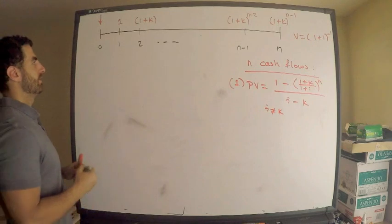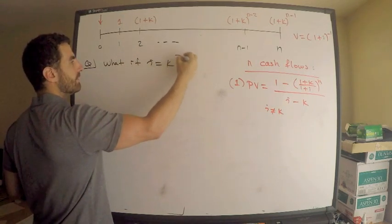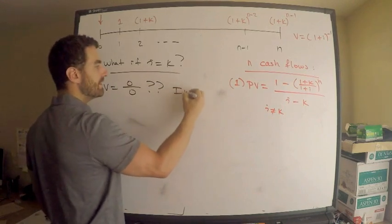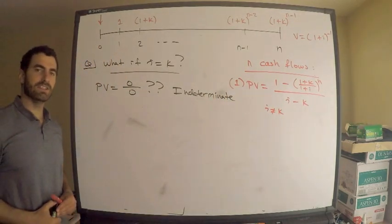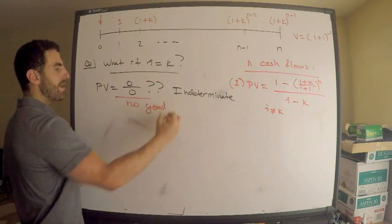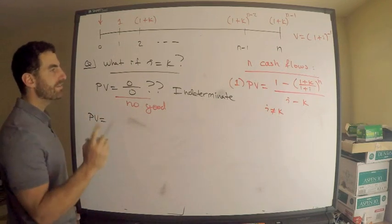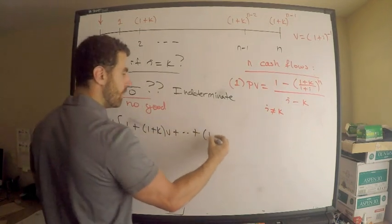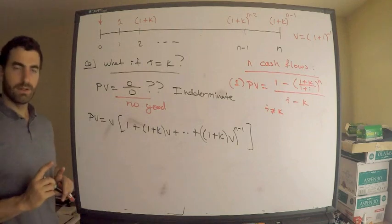So what if i equals k? What do I do then? The present value formula gives 0/0, which is indeterminate — you cannot just write that down and be done. You might want to use L'Hôpital's rule, but what do you differentiate with respect to? Instead, I'll go back to the definition of the present value of these specific cash flows. We had: v times [1 + (1+k)v + ... + ((1+k)v)^(n−1)].